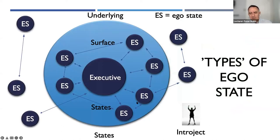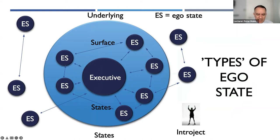There are various different types of ego states. I'll introduce each of these in their own right in a moment. There is an executive ego state, there are surface states, and there are what are known as underlying states as well. These little arrows are basically indicating the level of communication between the states, and you can see the surface states are very much in communication with each other and the executive.